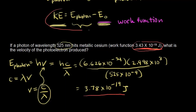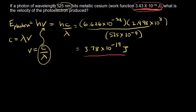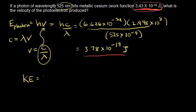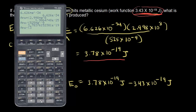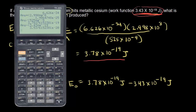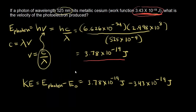Let's find the kinetic energy of the photoelectron produced using the equation: kinetic energy of the photoelectron equals the energy of the photon minus the work function. Plugging in numbers: the energy of the photon was 3.78 times 10 to the negative 19 joules, minus the work function of 3.43 times 10 to the negative 19 joules. That gives us 3.5 times 10 to the negative 20 joules — this is the kinetic energy of the photoelectron.